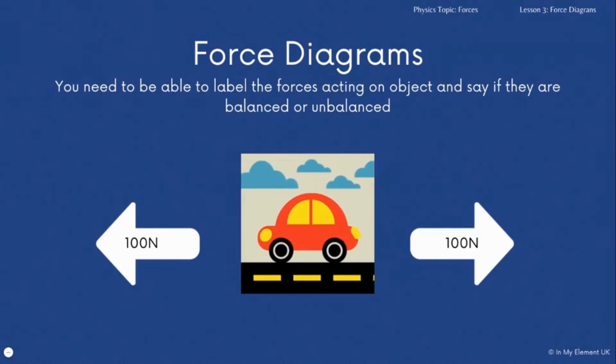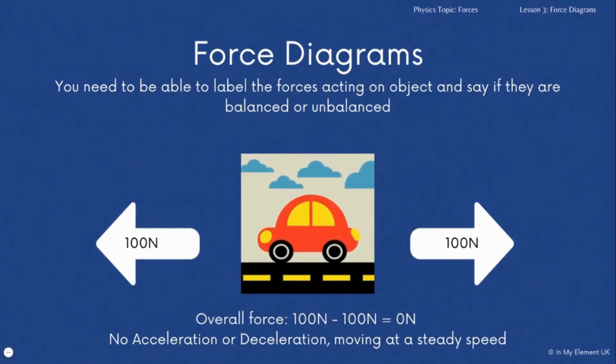Now on this one I've used a different image here but both forces acting on the car are 100 newtons. As the forces are equal there is no acceleration so the car is moving at a steady speed because the forces are balanced. So to calculate it it's 100 newtons minus 100 newtons which means it's 0 newtons so there's no acceleration or deceleration.